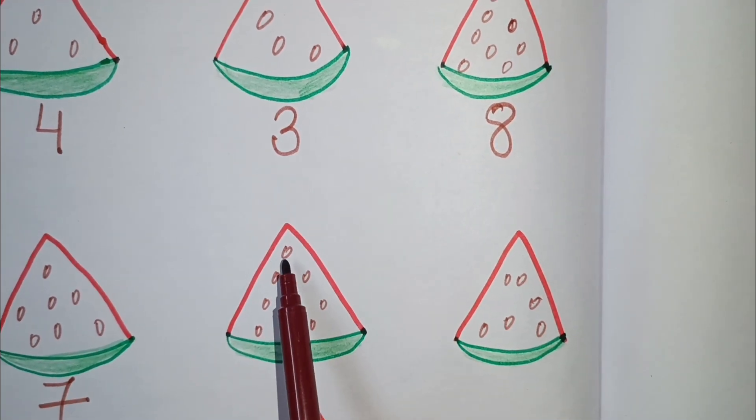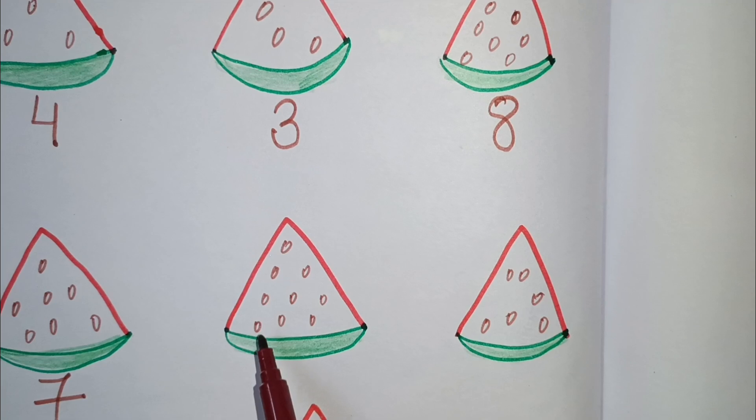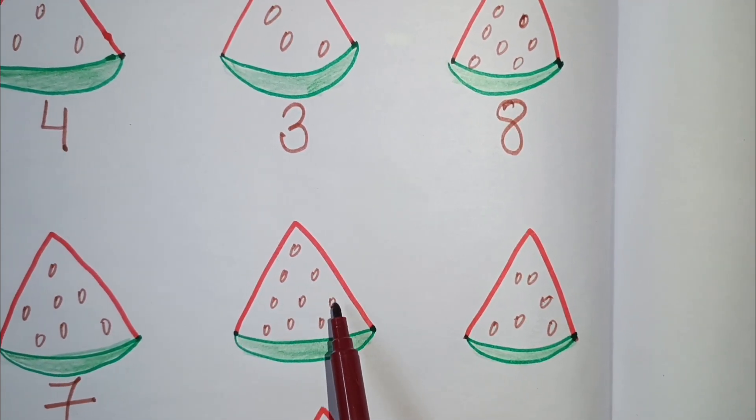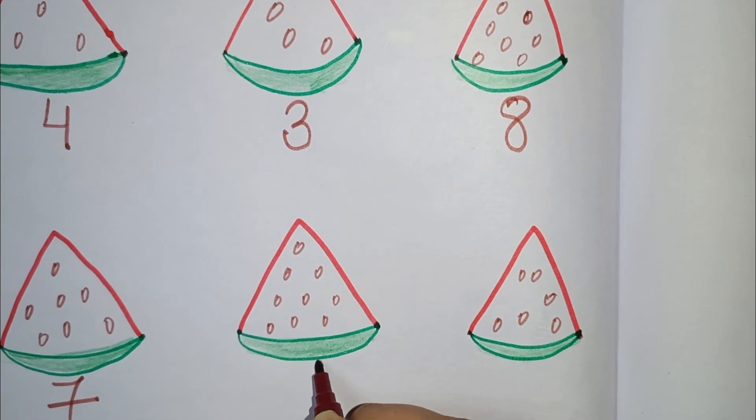Next is 1, 2, 3, 4, 5, 6, 7, 8, 9. It has 9 seeds.